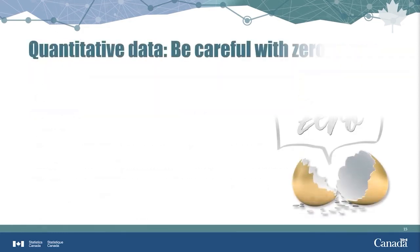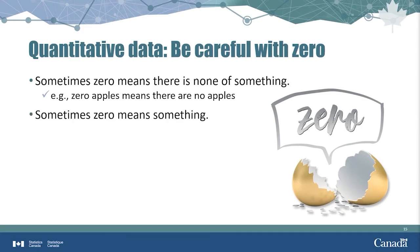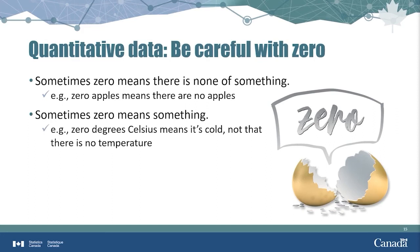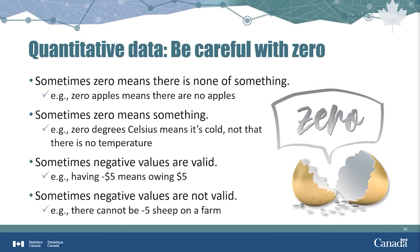There's one very important value to be careful with in quantitative data: the value of zero. Sometimes zero means there is none of something. For example, zero apples means there are no apples. Sometimes zero does mean something — for example, zero degrees Celsius means it's cold outside, not that there is no temperature. In some cases, negative values are valid. For example, if I have minus five dollars, it means I owe five dollars. However, sometimes negative values are not valid. For example, there can't be minus five sheep on a farm. Be mindful of the meaning of zero when working with quantitative data.